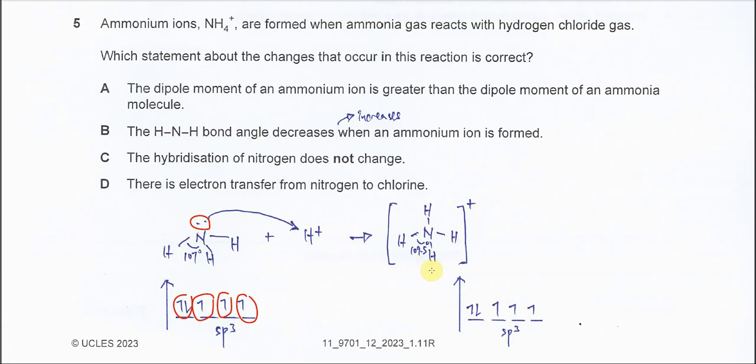But however you need to know, after the dative bonds form, the hybridization of nitrogen still no change. It's still sp3. So let's start the question.